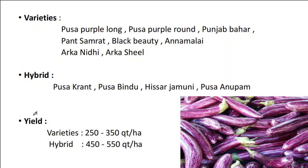Pusa Purple Long is an extra-long and early-maturing variety. Other important varieties include Pusa Purple Round, Punjab Bahar, and Pant Samrat — which is resistant to Phomopsis blight and bacterial blight. Black Beauty is a nematode-resistant variety, and Annamalai is highly recommended for Tamil Nadu as an aphid-resistant variety. Arka Nidhi and Arka Shree have been released by IIHR, where Arka Shree is resistant to little leaf of Brinjol.